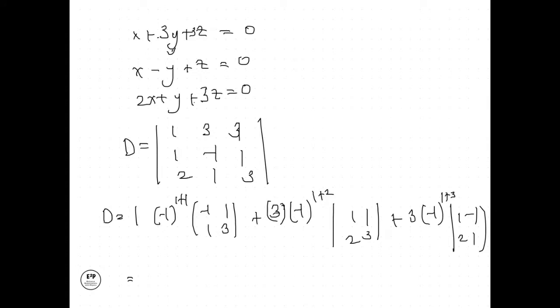So we get 1·(-3 - 1) minus 3·(3 - 2) plus 1·(1 + 2). Solving this particular algebraic form, we will get -2 as our determinant.